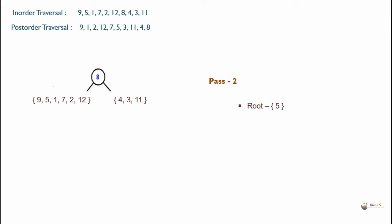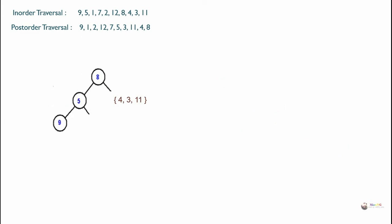Now locate 5 in in-order traversal. 9 is on the left of 5, and 1, 7, 2, and 12 are on the right. So we can rewrite the binary tree with 5 as root, 9 on the left, and 1, 7, 2, and 12 on the right.